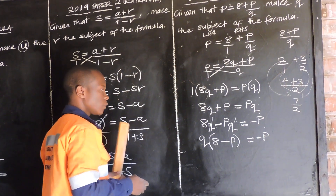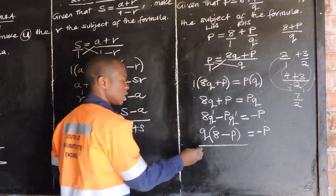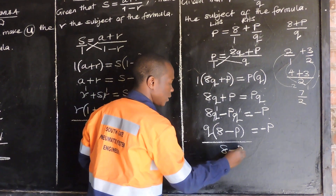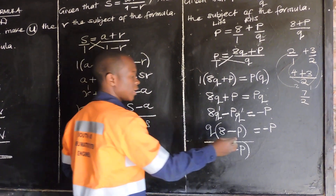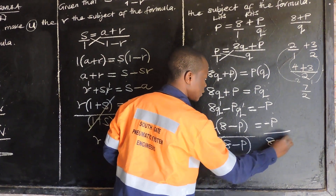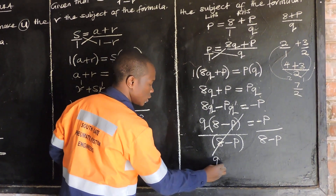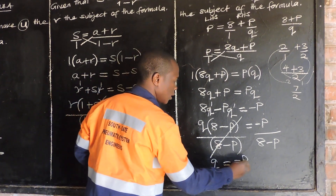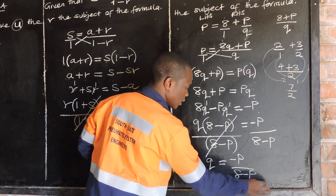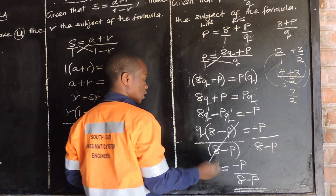Making Q the subject of the formula, we need to remove the bracket 8 minus P. So we divide both sides by 8 minus P. These two cancel, so Q is equal to negative P over 8 minus P. That is our answer. We have made Q the subject of the formula.